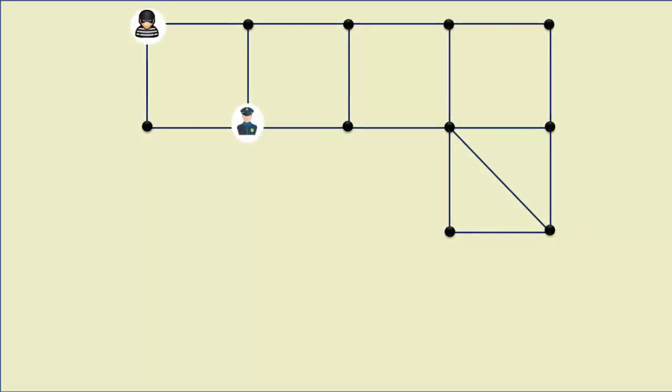It might seem impossible to catch the thief because the thief has second turn to make a move. So he can easily maintain safe distance from the police. And this cycle seems never-ending. So how can we solve this puzzle?